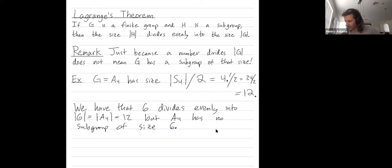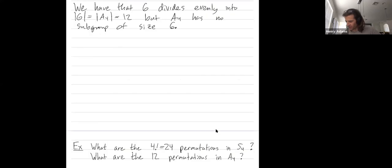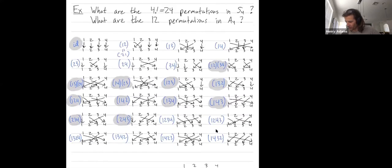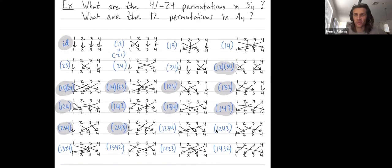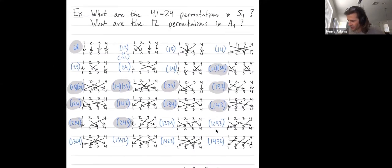Let me make this seem a little bit more real. 24, the number of elements in the symmetric group on four numbers. Here's all the 24 elements in the symmetric group on four numbers. So these are all the 24 different permutations of four numbers.